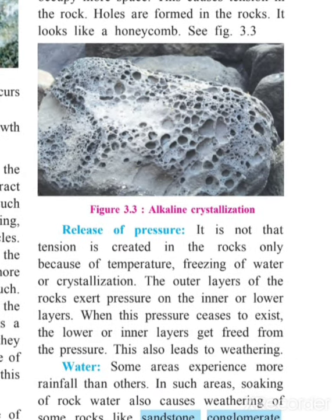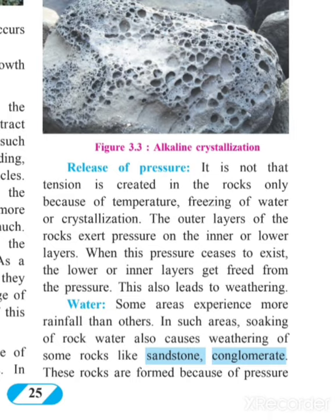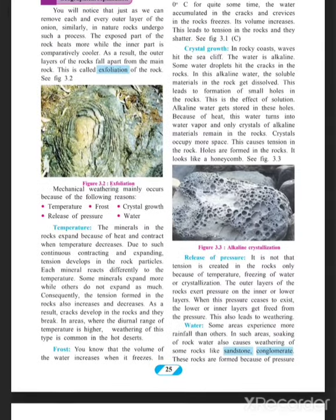The fourth example is release of pressure. Tension is created not only inside the rocks but also outside them. The rock chips off on hitting other rocks or walls. When this pressure ceases to exist, the lower or inner layers get freed from the pressure — this also happens because of weathering. The fifth example is water. Some areas experience more rainfall, some less. In such areas, soaking of water into rock also causes weathering, forming rocks like sandstone and conglomerate. This was all about mechanical weathering due to five reasons.